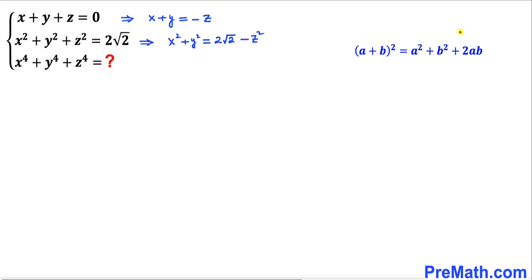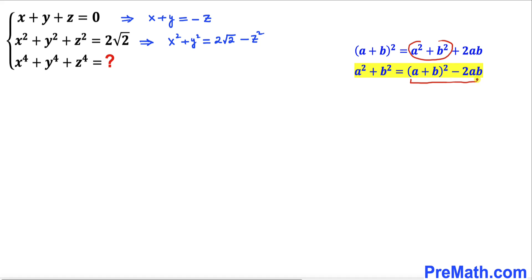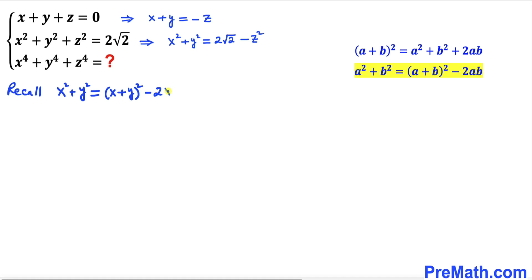Now let's recall this famous identity: a plus b whole square equals a squared plus b squared plus 2ab. Moving the 2ab to the other side, our a squared plus b squared could be written as a plus b whole square minus 2ab. Let's now apply this identity for x squared plus y squared, which equals x plus y whole square minus 2xy.